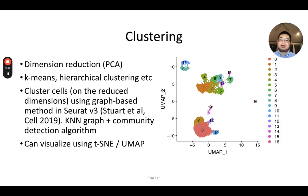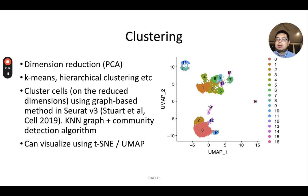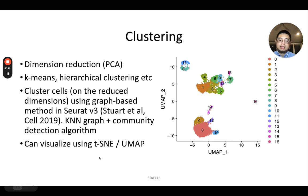After dimension reduction with PCA, we can do clustering on the PCA space. We can use k-means or hierarchical clustering, but the most popular approach is graph-based methods implemented in Seurat or Scanpy. You first build a k-nearest-neighbor graph and then use a community detection algorithm to detect clusters. You then visualize those clusters on UMAP or t-SNE.